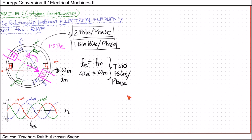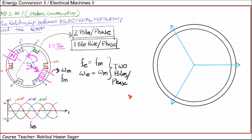Now let us see the stator configuration for the four-pole-per-phase case. Suppose this is the stator frame. Previously we had two poles per phase and the pole angle difference was 180°, since 360° divided by 2 gives the mechanical angle difference between the poles in each phase. Now for phase A, instead of two poles per phase, if we consider four poles per phase then the mechanical angle difference between the poles will be 90°, since 360° divided by 4 equals 90°. So let us draw the first pole here.